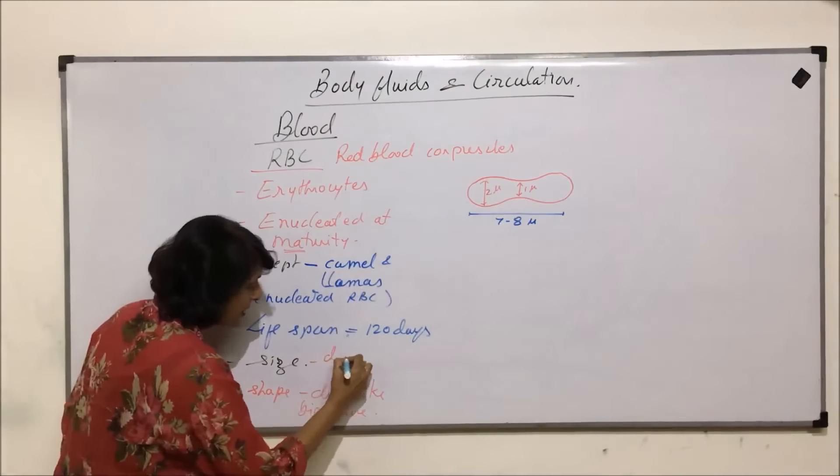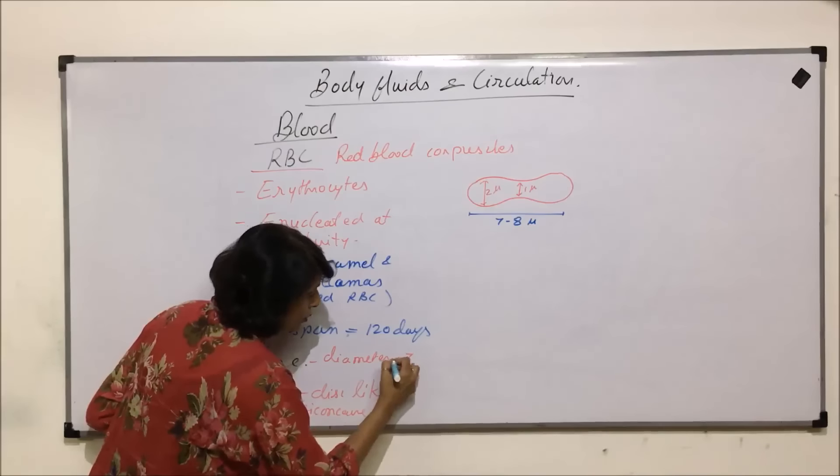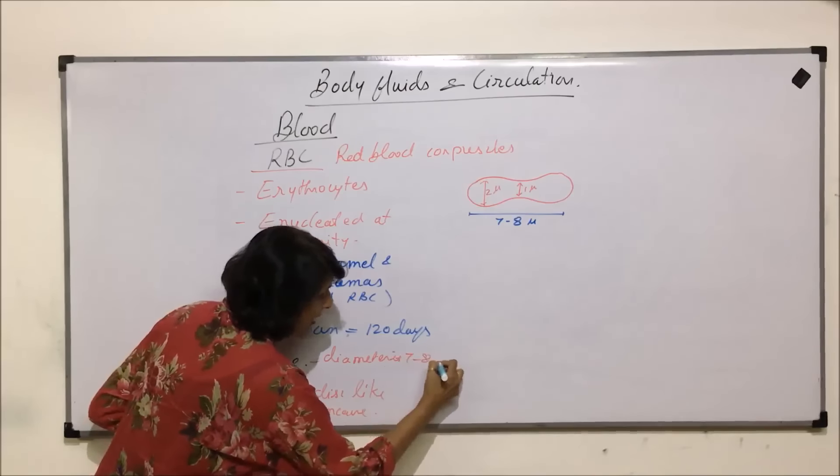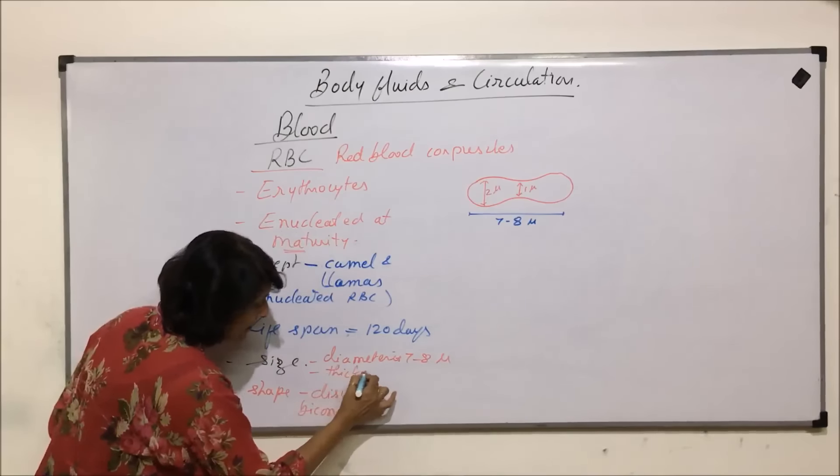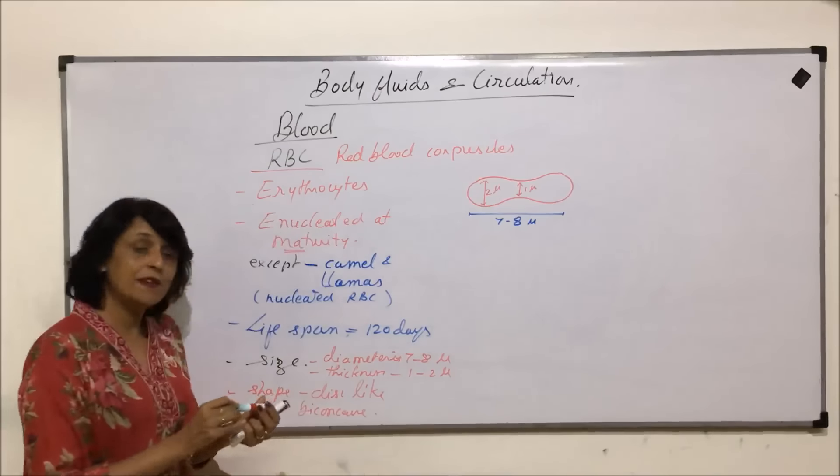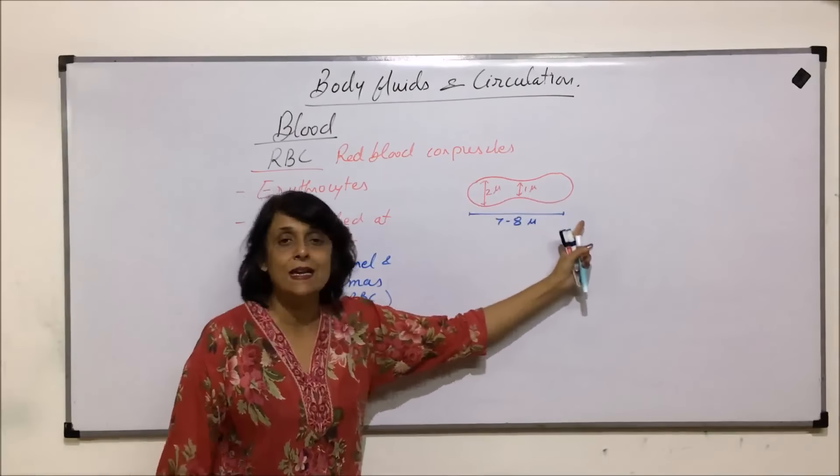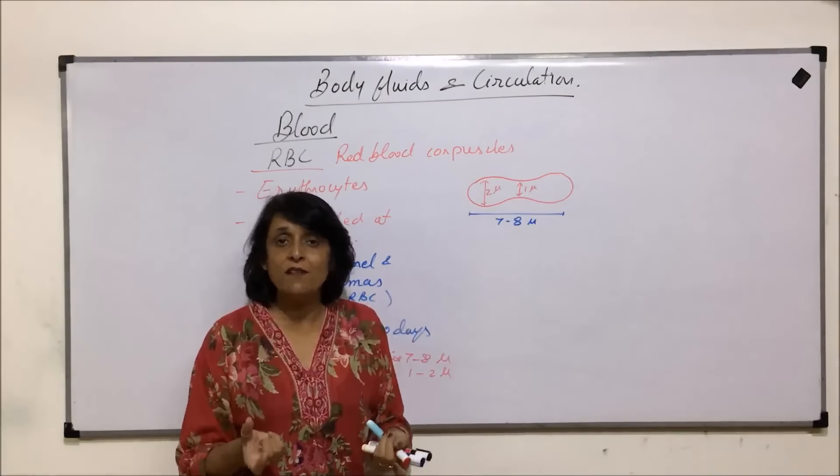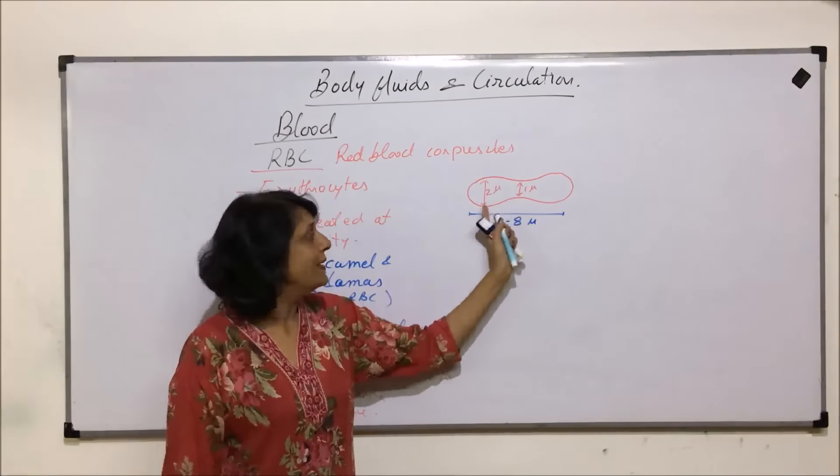Size diameter is 7 to 8 microns and thickness is 1 to 2 microns. Why are we writing 1 to 2? Because in the middle part it is 1 micron, and near the peripheral part which is slightly swollen is 2 microns. That is the size and the shape. Now let us come to the number.